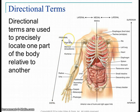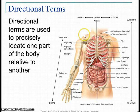Proximal and distal are only used when looking at two body parts on the same limb — arms and legs. Proximal means closer to the body trunk; distal means further away. So the wrist compared to the elbow: the wrist is distal and the elbow is proximal. But comparing the shoulder and the elbow, the shoulder is proximal and the elbow is distal. Superficial versus deep: superficial means more towards the outside — skin is superficial. Muscle is deeper, more internal.